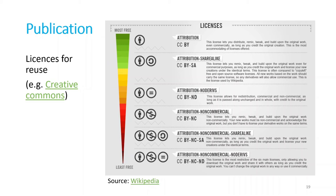Then there are more restrictive licenses. Attribution-ShareAlike means you can use the data but must publish it with the same or a comparable license. No Derivatives means you can use the data but cannot make derivatives from it. Then there's Non-Commercial — but the further down you go, the more restricted it becomes.